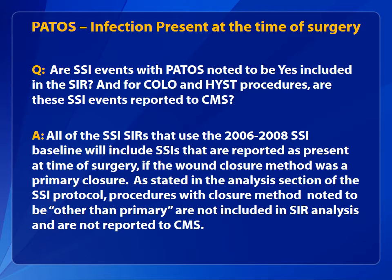Here are two other questions we get. Are SSI events with PATOS marked yes included in the standardized infection ratio, or SIR? And for colo and hist procedures, are these SSI PATOS events reported to CMS? All SSIs reported as present at time of surgery are included in the SIR if the wound closure method is noted as a primary closure. Procedures with closure methods other than primary are not included in SIR analysis. All colo and hist procedures which are primary closures and their associated SSI events are reported to CMS.